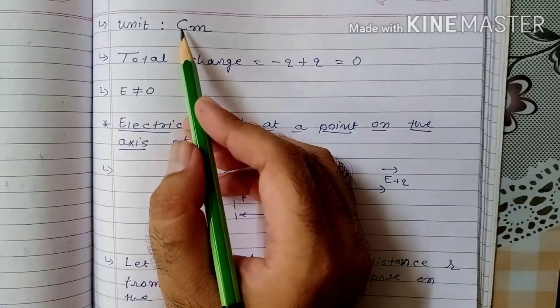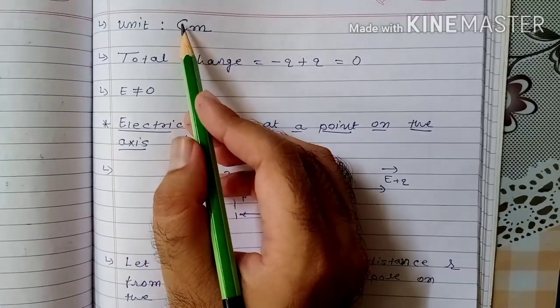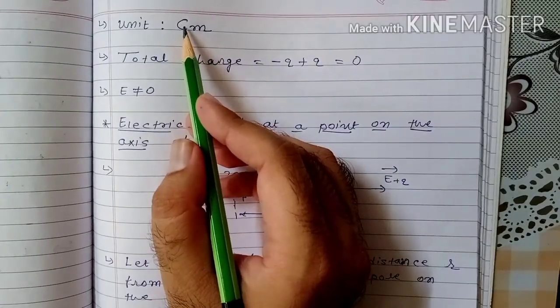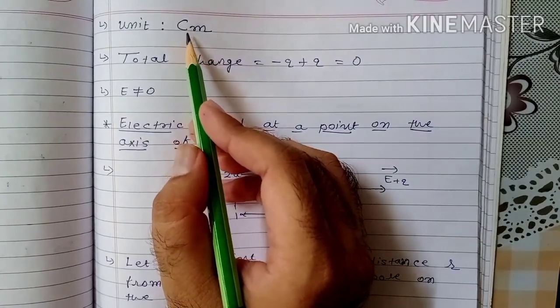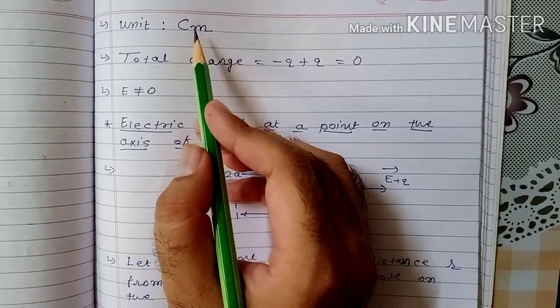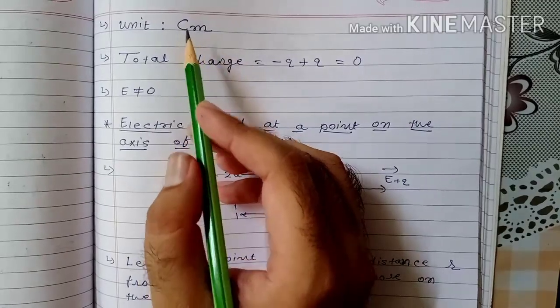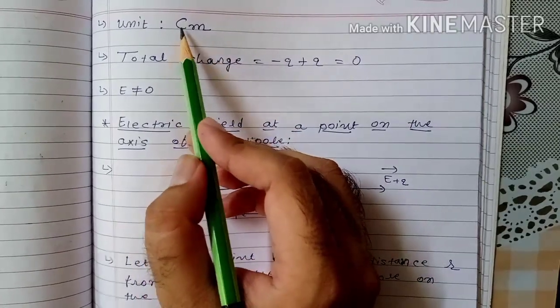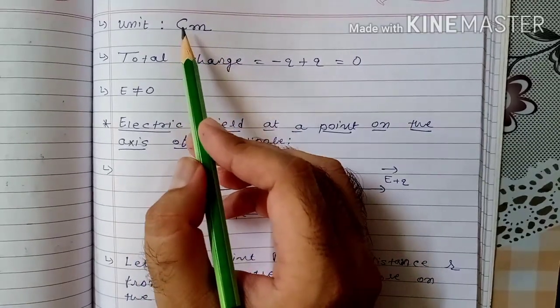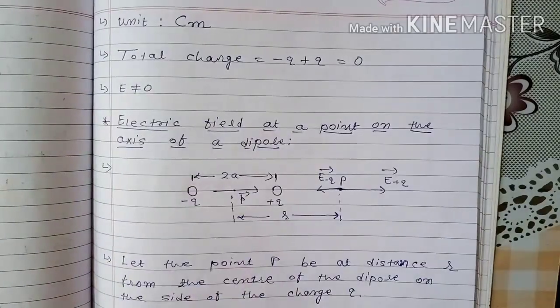Here C must be written in capital. If you write it in small, it will be considered as centimeter. But the unit of electric dipole moment is coulomb meter, so you have to write capital C.